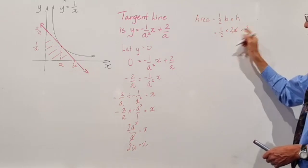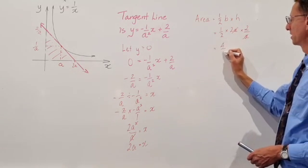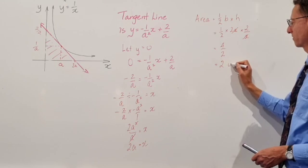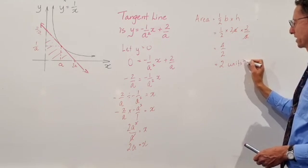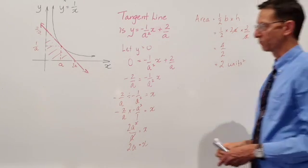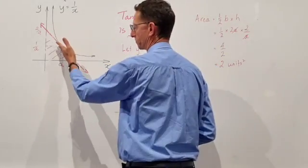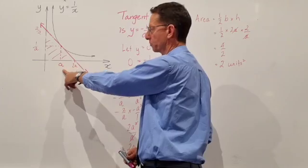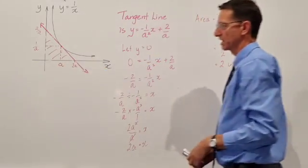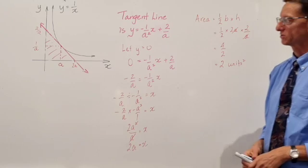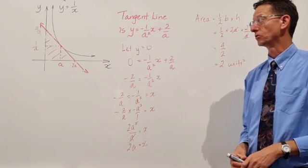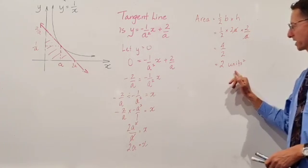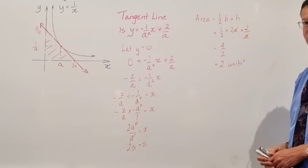Now we've got an a and an a here, which we can cancel. 2 times 2 is 4. And we divide that by 2. So our area is 2 units squared. And that's regardless of where the tangent meets reciprocal function, because we've come up with a general value here for where the tangent meets the curve. So any tangent in the positive quadrant for the reciprocal function y equals 1 on x will create a triangular area of 2 units squared.